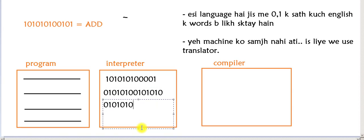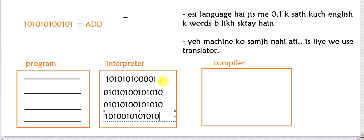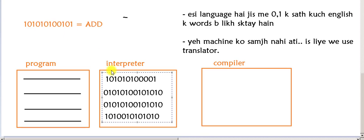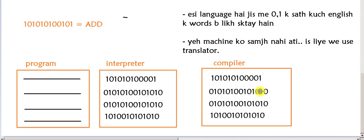The interpreter takes each line, converts it, and processes it one at a time until the last line is converted. Now the compiler works differently — it takes the entire program as input and converts the whole program into machine code at once. So the interpreter converts line by line, while the compiler converts the entire program to machine code together.